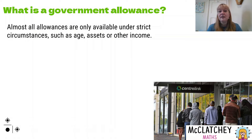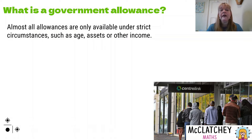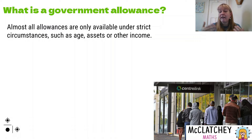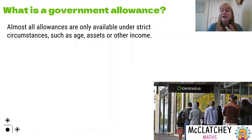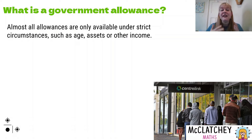The strict circumstances include things like your age — we're going to see that with the youth allowance, where you have to be a certain age to qualify. Your assets — things that you own — the government will want you to outline what your house is worth, what your car's worth, what your furniture's worth, how much you have in the bank, any personal effects, and any investments. So they want to know everything about you before they give you money.